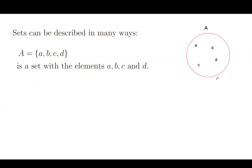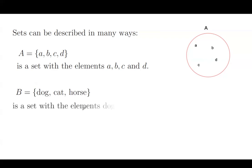You can also use a diagram and visualize set A. Set A includes members A, B, C, and D. Another set like B can include dog, cat, and horse. This is a set with three elements or three members.